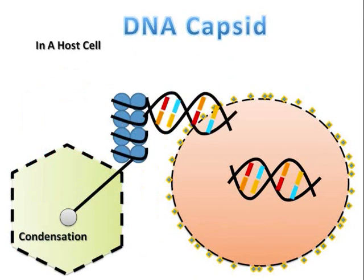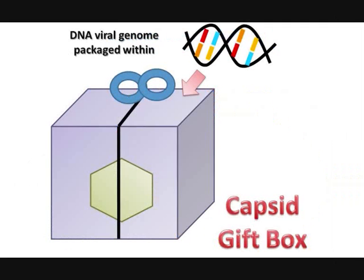In the assembly of DNA icosahedral capsid virions, the first step is the condensation of genomic DNA with histones to produce nucleosomes, resulting in a compact particle around which the capsid is built. Histones are lost during the formation of the capsid. In short, the process of assembly involves viruses packaging their genomes in viral capsids.